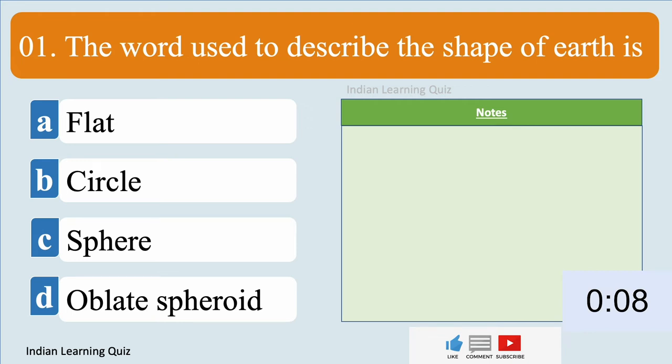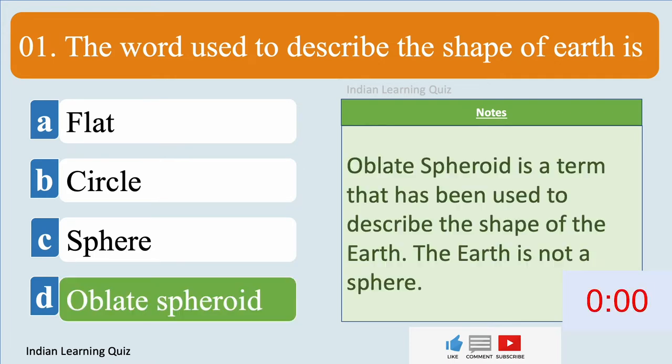The word used to describe the shape of Earth is oblate spheroid.